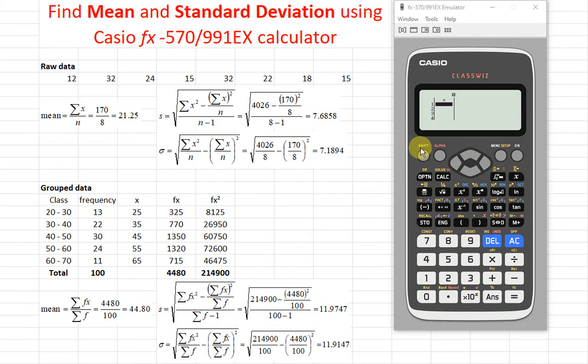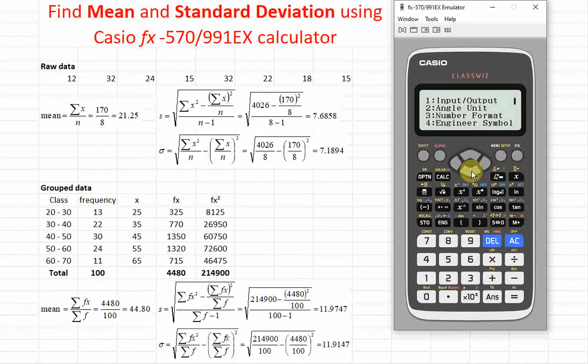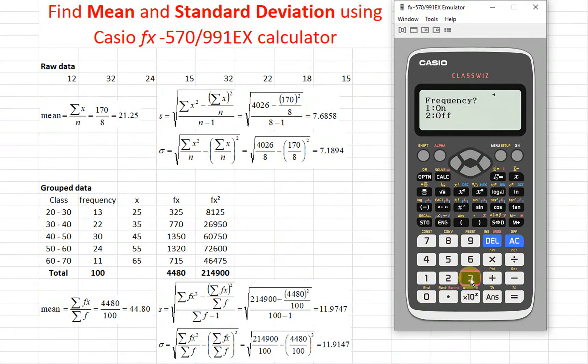So shift setup. Then we look for stat, sorry, we have to press the down button first. Stat, then frequency on. We turn on. So we have frequency already.